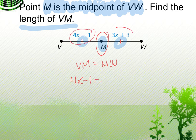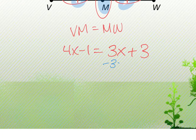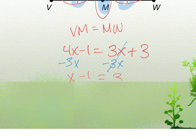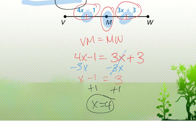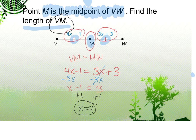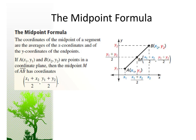Since VM equals MW, we set 4x − 1 equal to 3x + 3. Subtracting 3x from both sides gives x − 1 = 3, so x = 4. But the question asks for the length of VM, not x. Plug x = 4 back in: VM = 4(4) − 1 = 16 − 1 = 15.